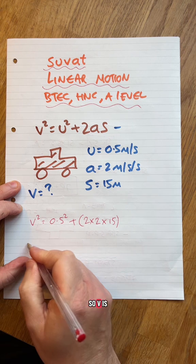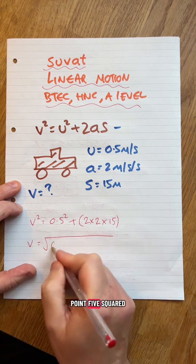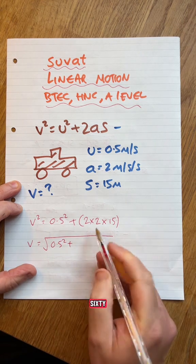Don't forget you've got a square root of all of this, so V is going to be square root of all of this. 0.5 squared plus, that was out there, 60.